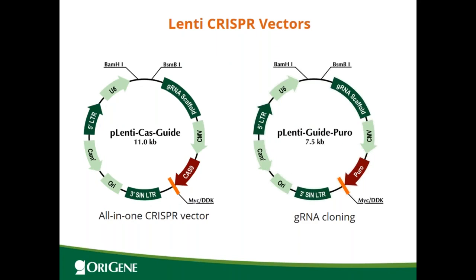For lenti CRISPR vectors, the all-in-one CRISPR vector on the left has a cloning site for gRNA cloning under U6 promoter and Cas9 expression under CMV promoter. The vector on the right is for gRNA cloning only — it does not have Cas9. It has a cloning site for gRNA under U6 promoter and also a puromycin selection marker under CMV promoter so you can use puromycin to select your cells.